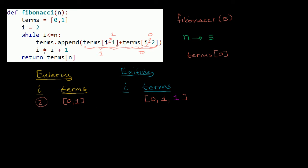Then we say i is equal to i plus 1. i is currently 2, so 2 plus 1 is 3 — that's the new value for i. We loop back to the beginning of the while loop and say: while i is less than or equal to n. Now i is 3, which is still less than or equal to 5. So we evaluate again. Entering the loop, terms now looks like [0, 1, 1] and i is 3.